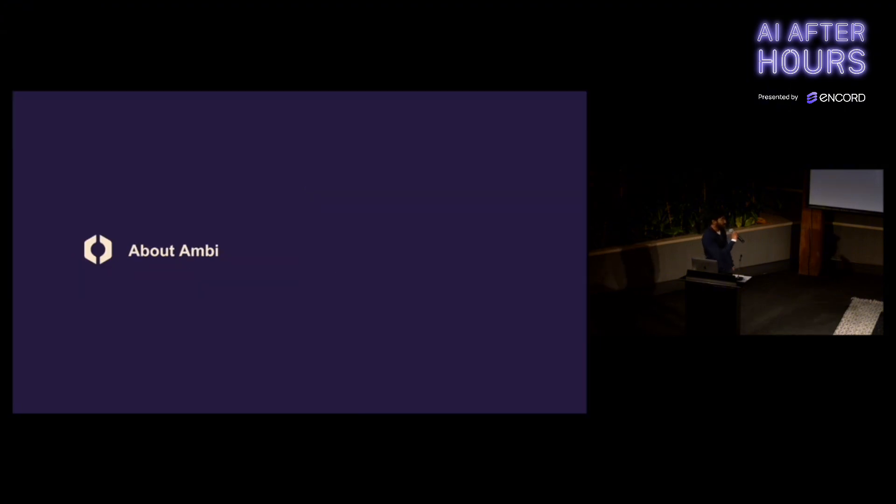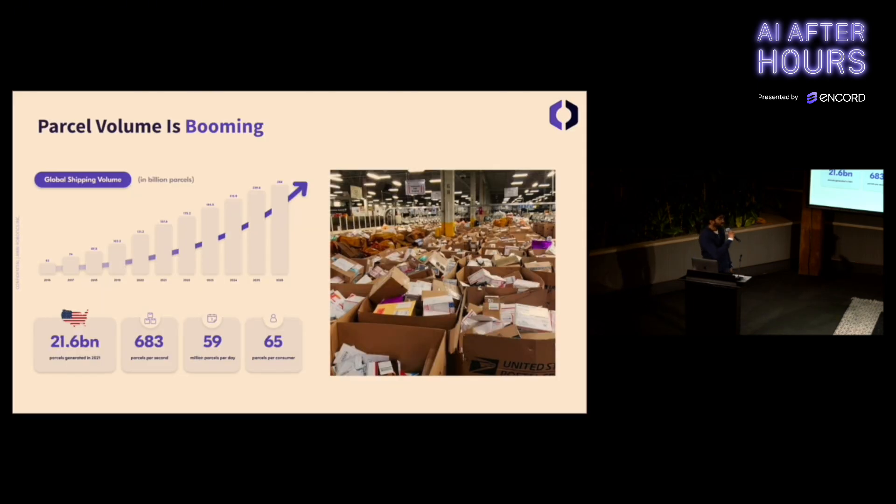First, a bit about Ambi. E-commerce is growing at an unprecedented rate. People are purchasing now more than ever, and how do you get packages? Through the postal system as parcel. So parcel volume is also booming. Although a lot of bulk upstream processes are automated, a lot of downstream processes are still not, and they're manual.